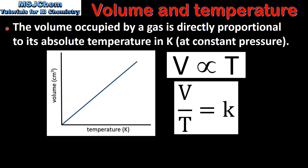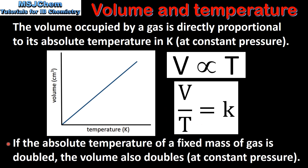The volume occupied by a gas is directly proportional to its absolute temperature in Kelvin at constant pressure. This can be written as volume is directly proportional to temperature. In this graph we have volume against the temperature in Kelvin and as you can see we get a straight line. This can also be written as volume divided by temperature equals a constant K. For example, if the absolute temperature of a fixed mass of gas is doubled, the volume also doubles at constant pressure.